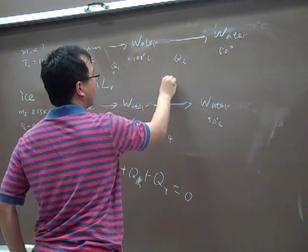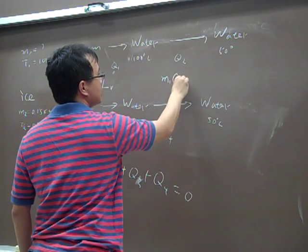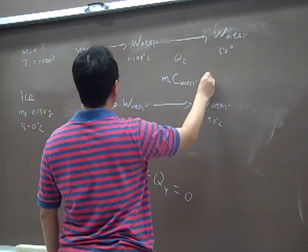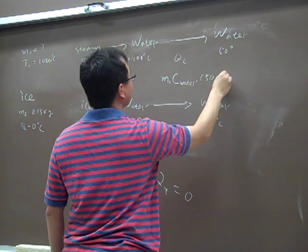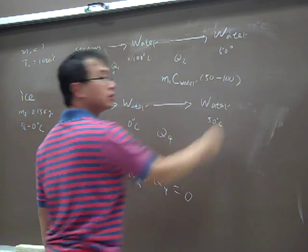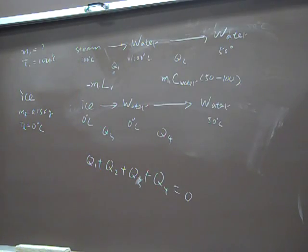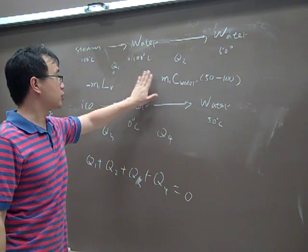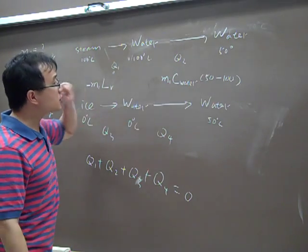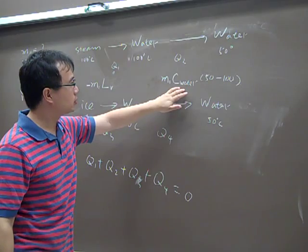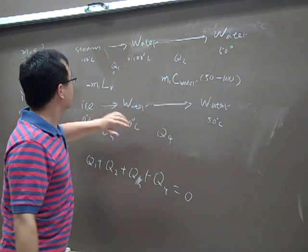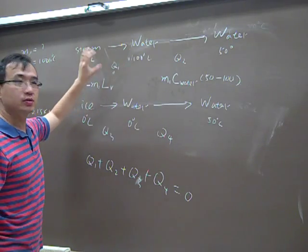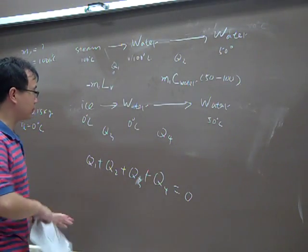And what's Q2? So it should be M1 multiplied by C water, multiplied by the temperature change, which is 50 minus 100. So here it will naturally give you a negative, but you don't have to worry about it. You don't put the sign here. So this is heat absorption or heat releasing during this process. This is the heat releasing during this process. That's phase transition, so the calculation is different.